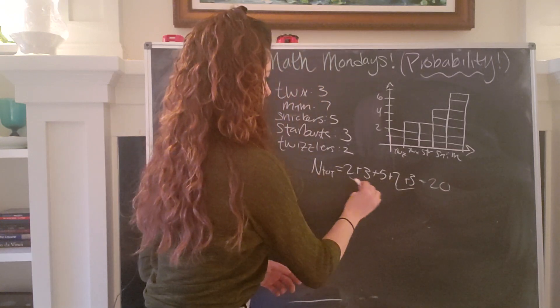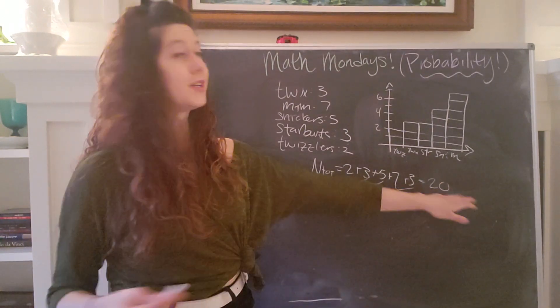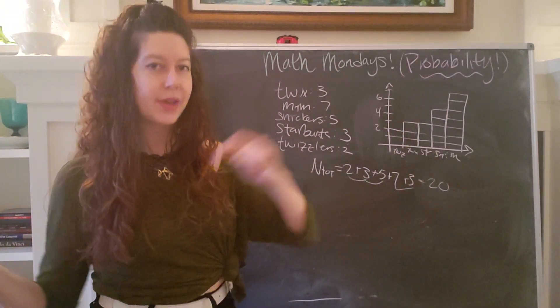Seven and three is 10, two and three is five, and then five is 10. So we have 20 pieces of candy total. Okay.